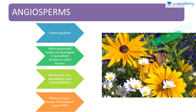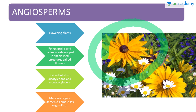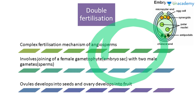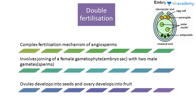Next are the angiosperms, the flowering plants you see most commonly. Pollen grains and ovules are developed in specialized structures called flowers. They are divided into two groups: dicotyledons and monocotyledons. They have their male organ as the stamen and female sex organ as the pistil.